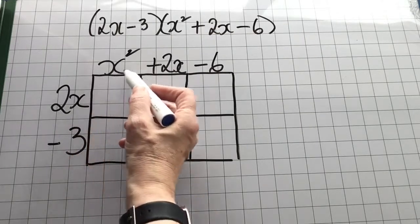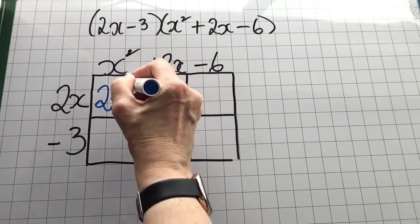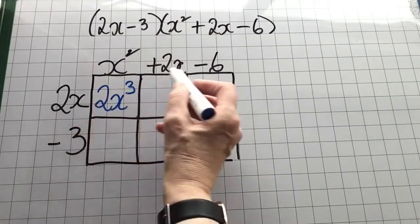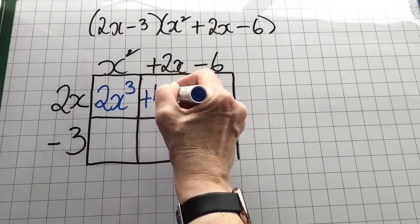Now 2x by x squared is 2x cubed. 2x by 2x is plus 4x squared. 2x by minus 6 is minus 12x.